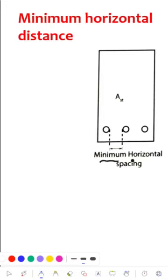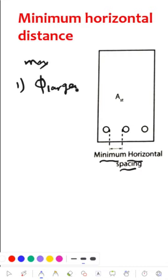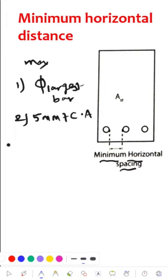The minimum horizontal spacing between the parallel bars of the main reinforcement in the concrete section is given as the maximum of: first, one diameter of the largest bar; second, 5 mm more than the nominal maximum size of the coarse aggregate; and third, 2/3 of the nominal maximum size of the coarse aggregate.